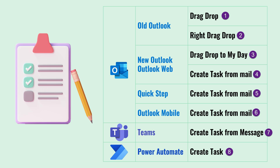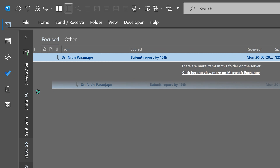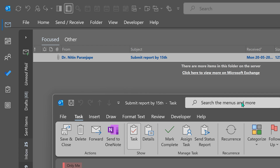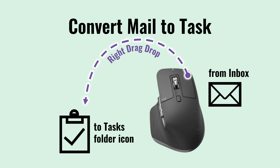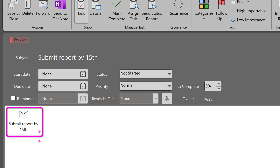There are eight ways of doing it — whichever method you like, you choose. Let's start with the old version of Outlook. I know it is getting replaced with the new version, but it's still there for at least a year. Drag the mail and drop it on the task folder — a task just gets created. The problem with this approach is it makes a copy, and if there was an attachment, it doesn't come through. If you want both, right-drag-drop — press the right mouse button while dragging, then drop — gives you three options. Choose 'move' instead of copy: the original mail with its attachment becomes an attachment inside the task, so everything is good.